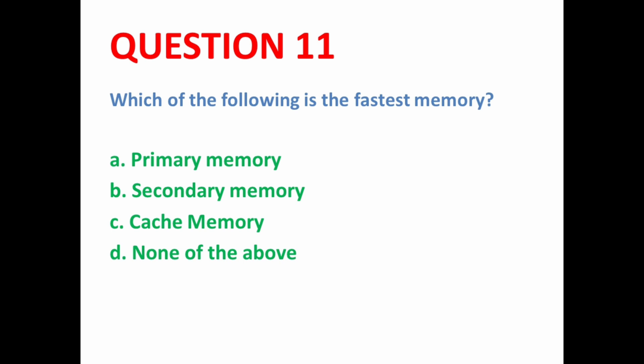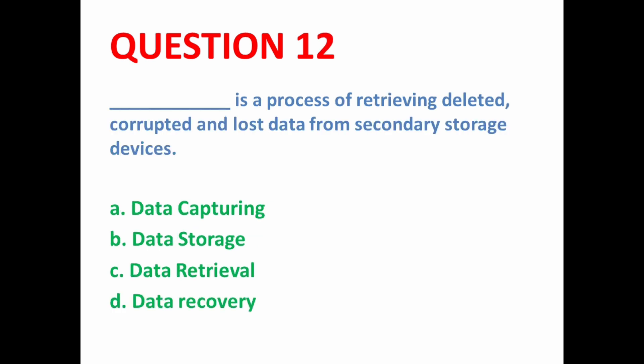Next MCQ: Which of the following is the fastest memory? Among primary memory, secondary memory, and cache memory, the fastest is cache memory, because cache memory stores documents or files that are frequently used by the CPU.